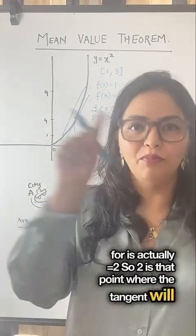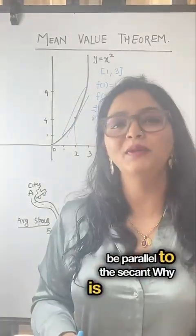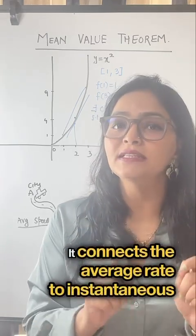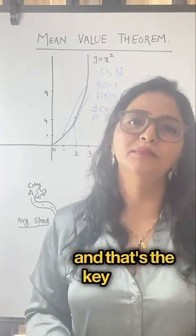So 2 is that point where the tangent will be parallel to the secant. Why is mean value theorem so important? It connects the average rate to instantaneous rates, and that's the key point here.